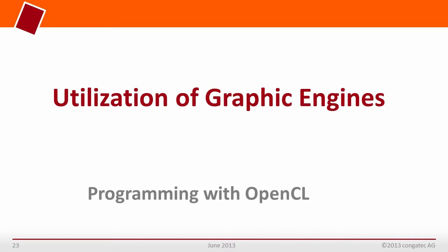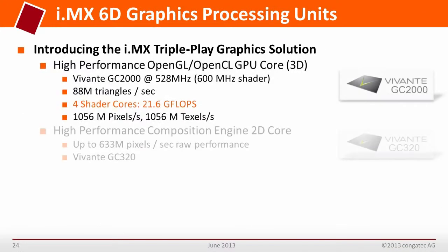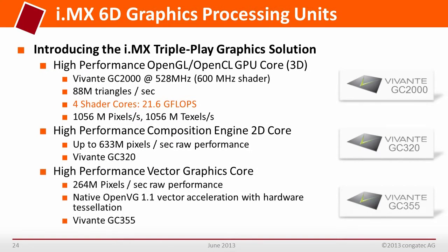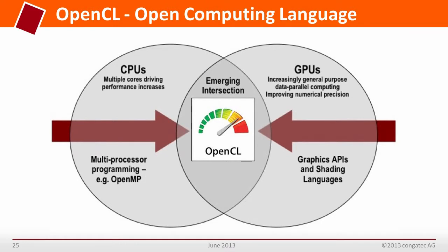Last but not least, I'd like to emphasize the open programming environment OpenCL. The i.MX6 dual and quad-core processors have a highly efficient graphics core — in fact three different cores for different types of applications. Most industrial applications do not utilize the 3D engine at all, yet this engine has four shading units with a total computing performance of more than 20 GFLOPs. This is an immense computing power you can utilize quite easily using the right programming tools: OpenCL.